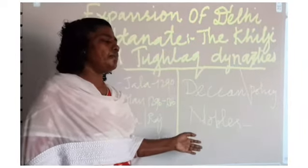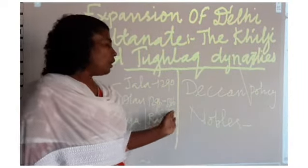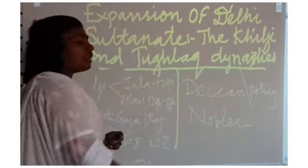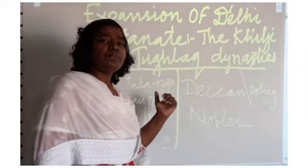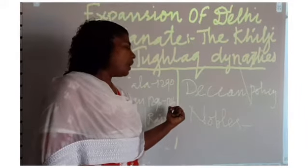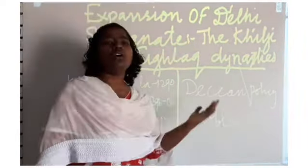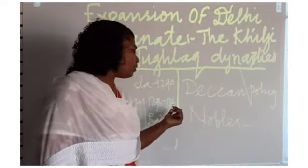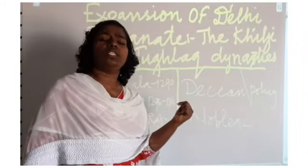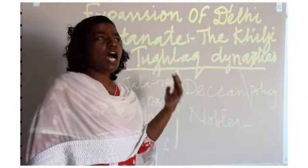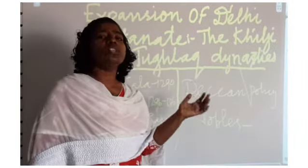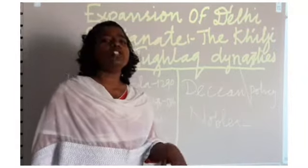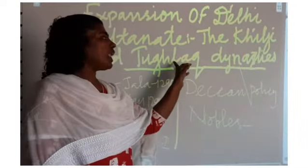These were the important policies followed by Alauddin Khalji. By 1305, most of North India came under his control. After Alauddin Khalji died, the rulers that followed were not strong, and the Khalji dynasty passed into the hands of the Tughluq dynasty.